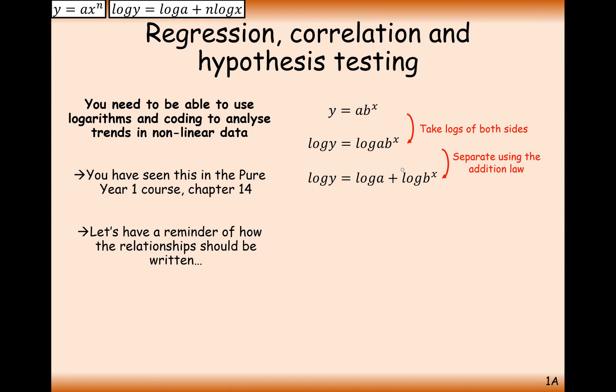Split up the law of logs on the right hand side with an addition of the multiplication a times bx. Use the law of logs to move the x to the front. And now we've got an equation where we're going to have log y on the y axis and standard x on the x axis. That's the main difference between the two graphs. One will have log x on the bottom. One will just have standard x on the bottom. So it's going to be log b that is the gradient. Previously, it was just the n value that was the gradient. And log a is the y intercept.